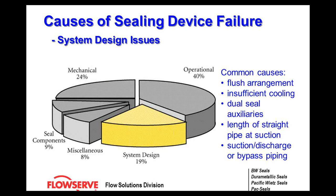System design common causes: seal flush arrangement — do you have the proper seal flush for the type of seal and system you're operating in? Insufficient cooling is again indicative of a flushing problem. Dual systems require auxiliaries; the auxiliaries have barrier fluids. Is your auxiliary seal pot in the right location? Do you have the right instrumentation? Is it piped correctly? All of those will cause seal failures.